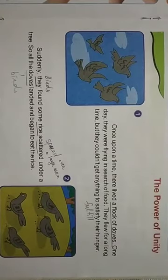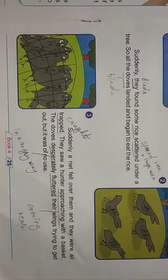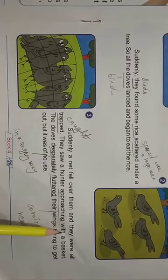All the doves landed and began to eat the rice. The birds were very hungry, so as soon as they found some rice scattered or spread on the ground, everybody landed there and started to eat the rice. Suddenly a net fell over them and they were all trapped.